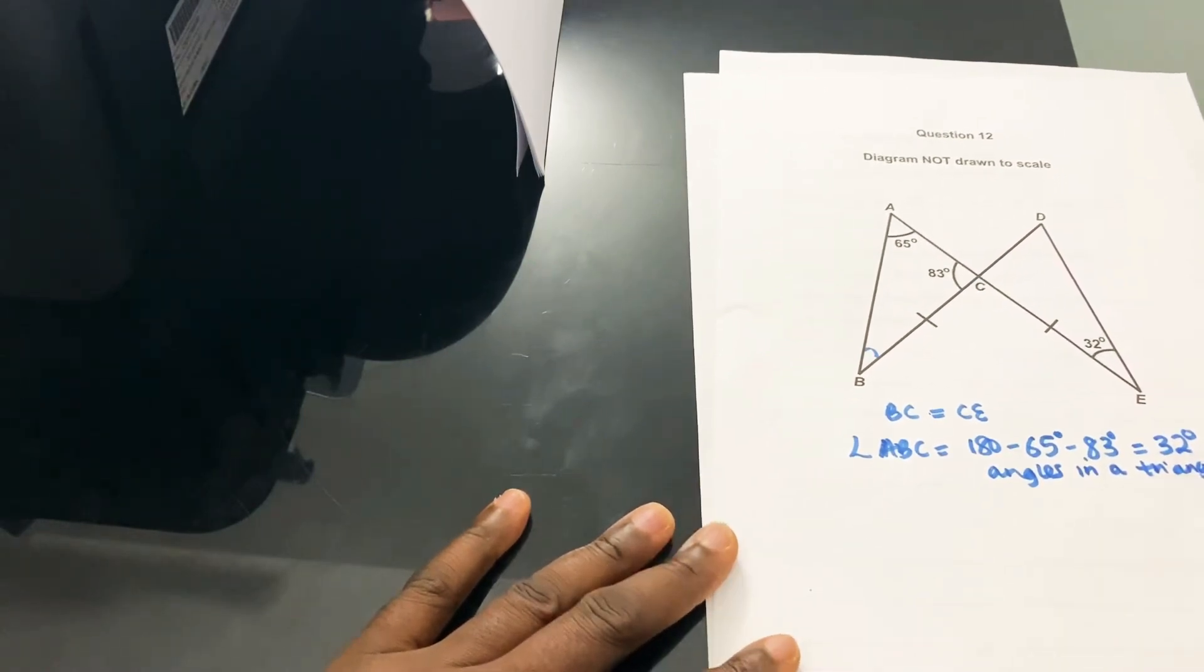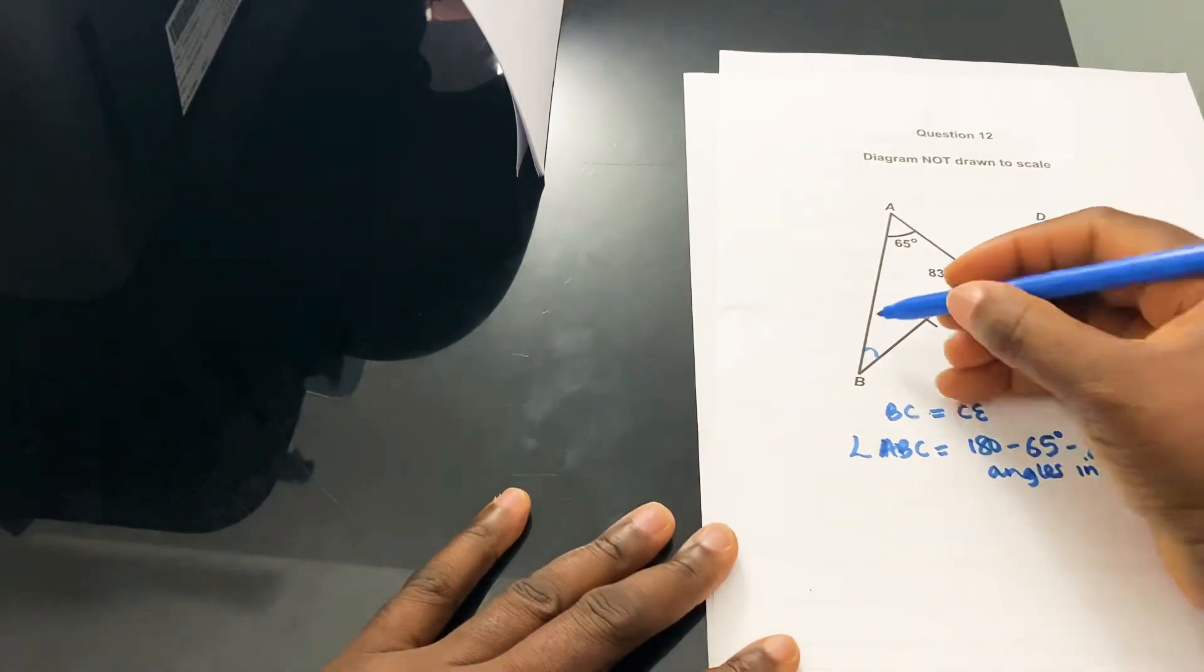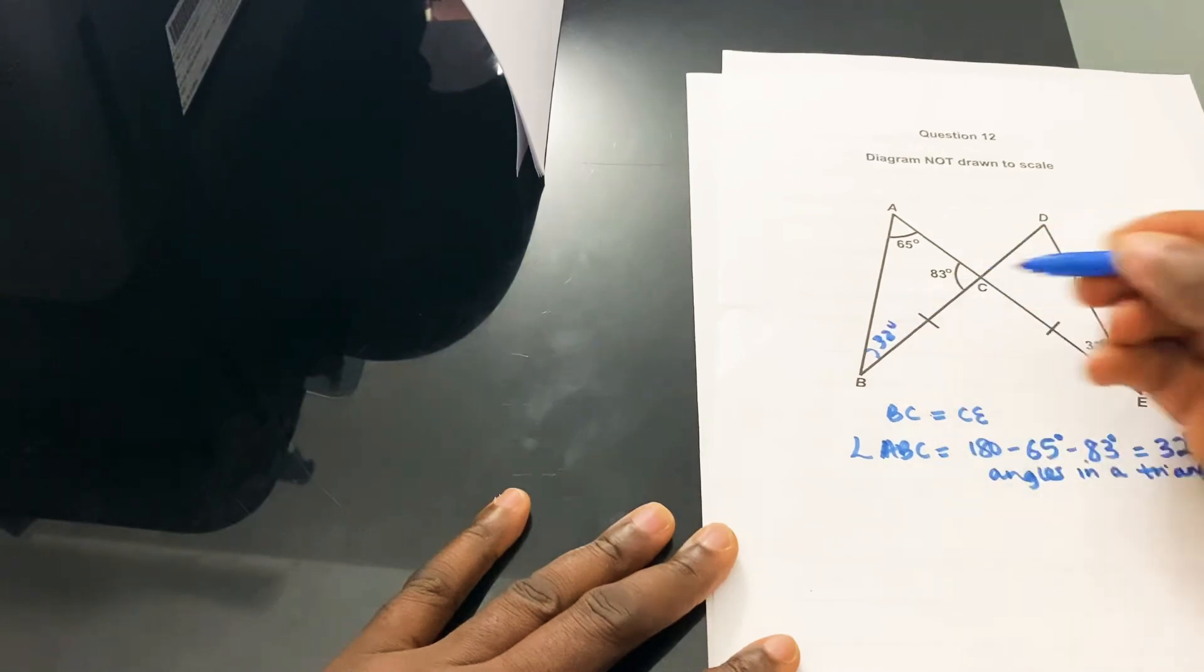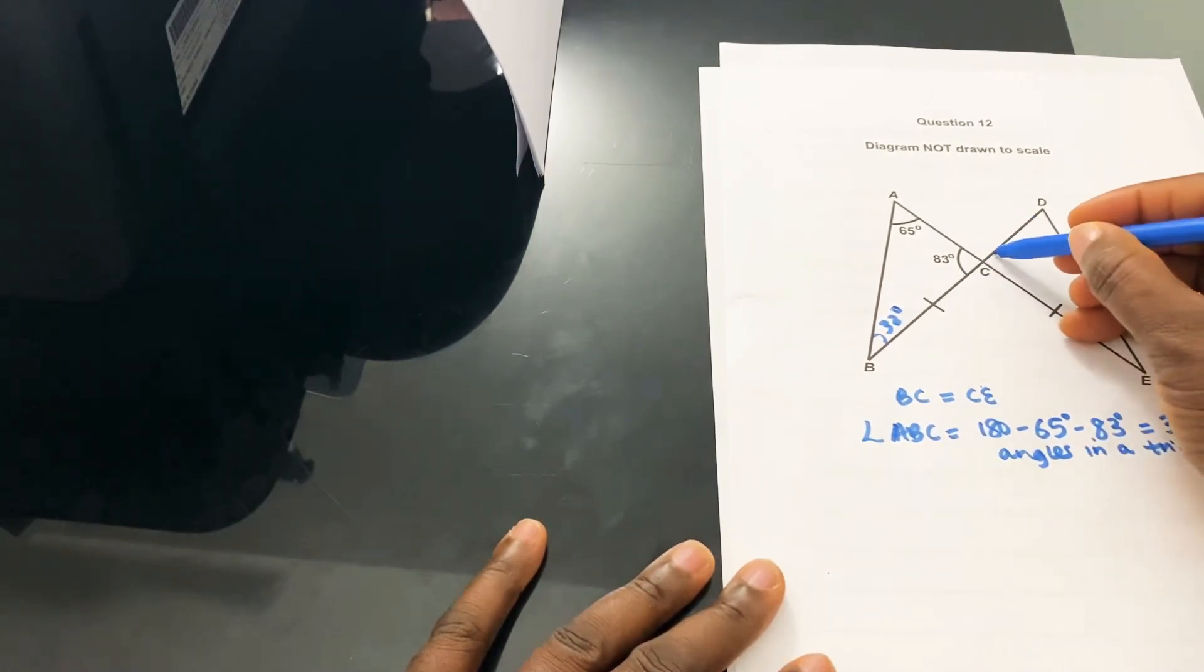So this angle here would be 32 degrees. Now you determine that one angle is equal to this angle, so that's two angles equal, two sides equal. The last thing we want to do is determine whether this angle here is equal to that one, then we can use angle-side-angle.